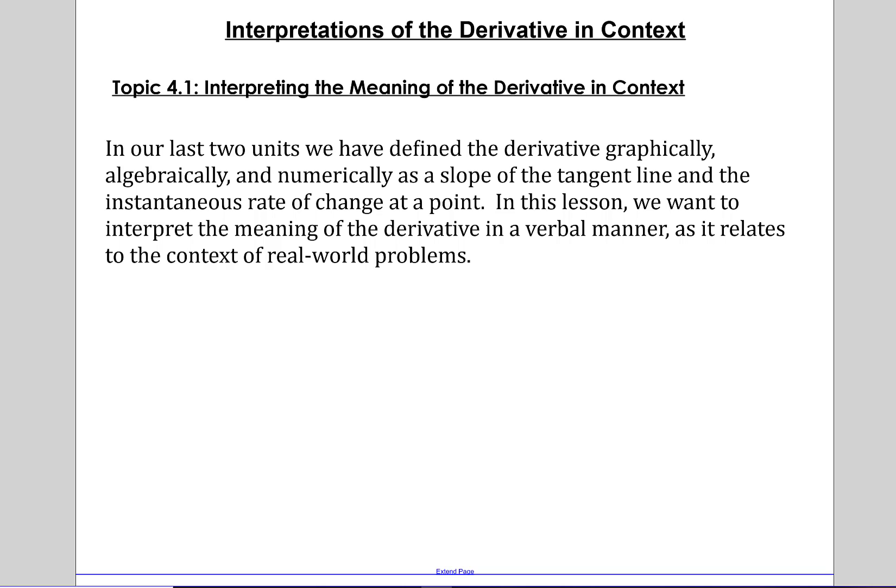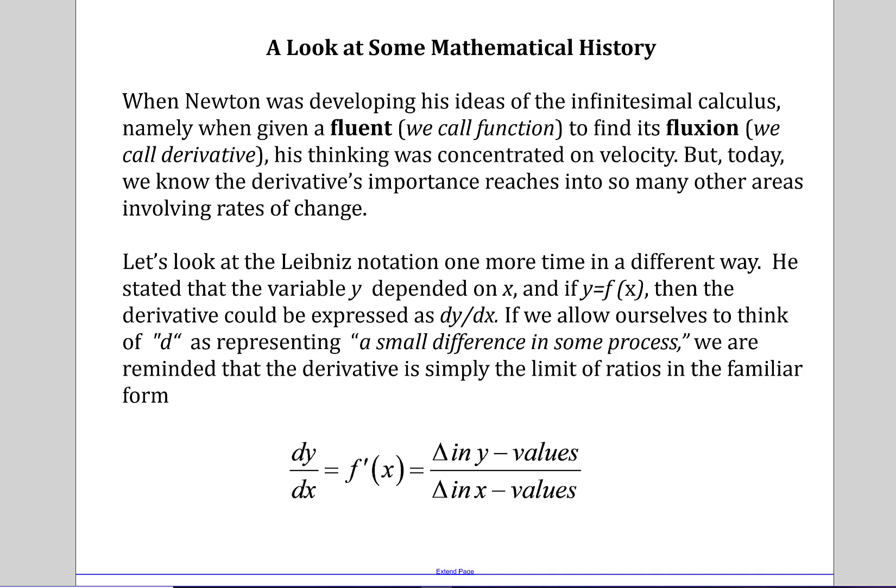First, let's look at a little bit of history. When Newton was developing his ideas of infinitesimal calculus, he called functions fluent and he called the derivative fluxion. His thinking was mostly concentrated on velocity and particles in space, or objects in space. But today we know the derivative's importance reaches into many other areas that involve rates of change.